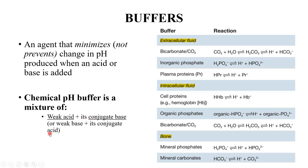Actual examples of buffer systems in the body are divided basically into three categories: extracellular fluid, intracellular fluid, and bone. You cannot afford to forget the ECF and ICF buffer systems — these are the important ones. Bone is covered in endocrinology.